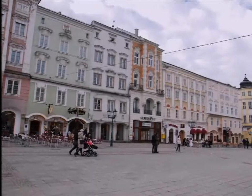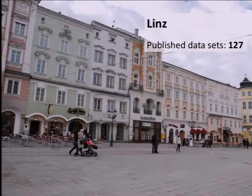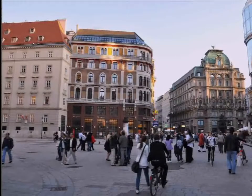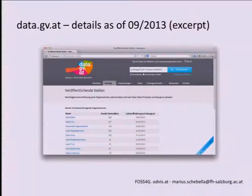In 2012, some authorities in Austria started to publish data sets. This is a picture of the city of Linz, who was the first city in Austria to publish government data — right now they published 127 data sets. Vienna was the second city; at the moment they published around 182 data sets. In Austria, all data sets that have a Creative Commons license and deal with demographic or government data are collected in a web service called Data GV.